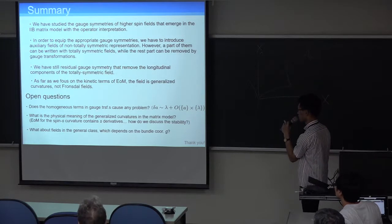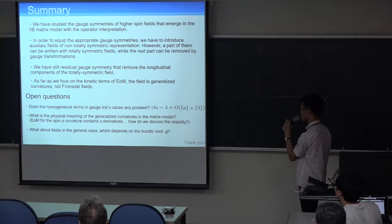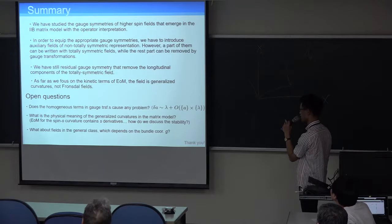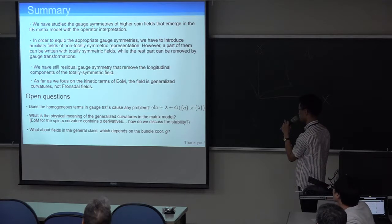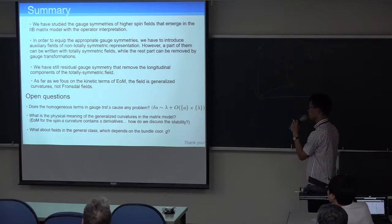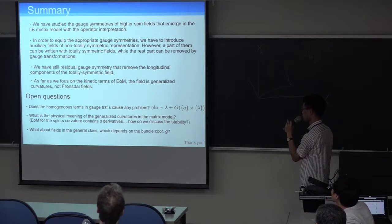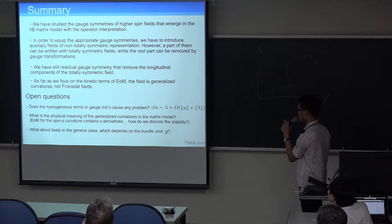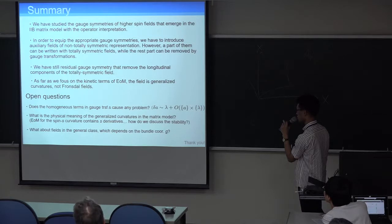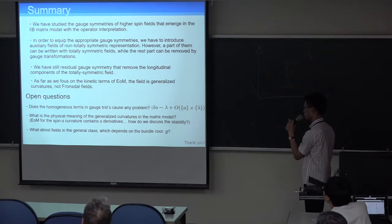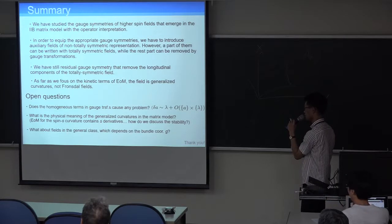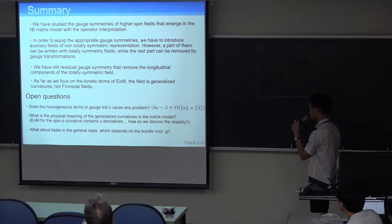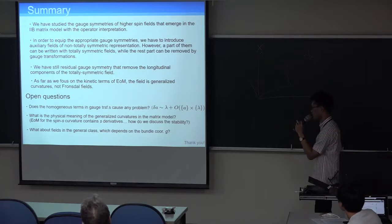There are many open questions. For example, does the inhomogeneous term in gauge transformation, which is completely ignored in my calculations, cause any problem? Or, what is the physical meaning of the generalized curvature in the matrix model? And most of all, what about fields in the general class, which depends on the bundle coordinates? This is the biggest problem. My talk is over. Thank you.